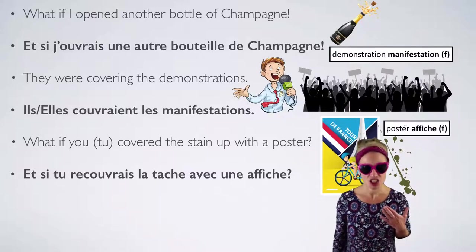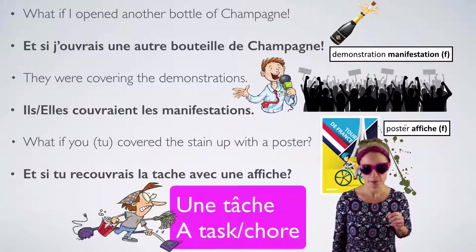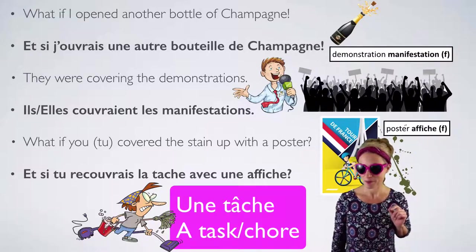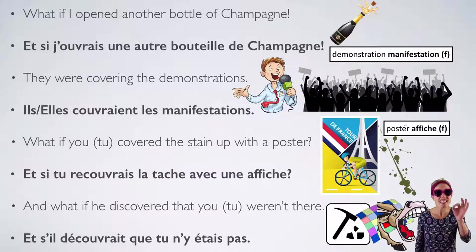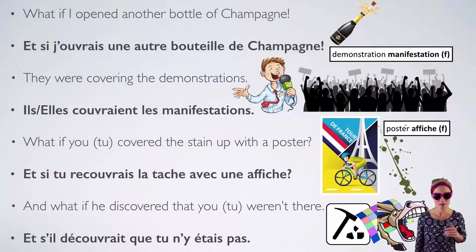A stain is 'une tache.' Think of your face being stained with a tache. There's another 'tâche' with a circumflex accent over the A — the little hat — which shows there used to be an S there. That one means 'a task.' 'And what if he discovered that you weren't there?' — Et s'il découvrait que tu n'y étais pas? In spoken French people also say: et s'il découvrait que tu étais pas là. 'Y' replaces 'là.' Think of 'il y a' — there is, there are.